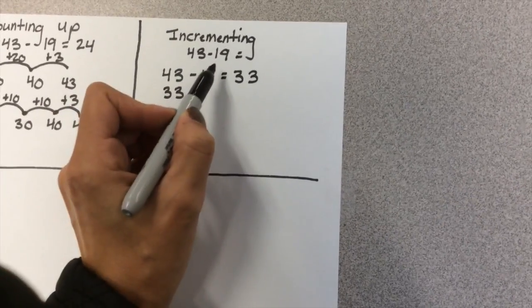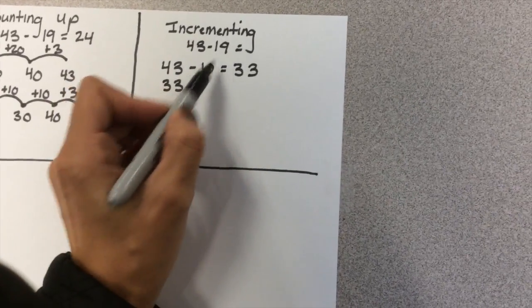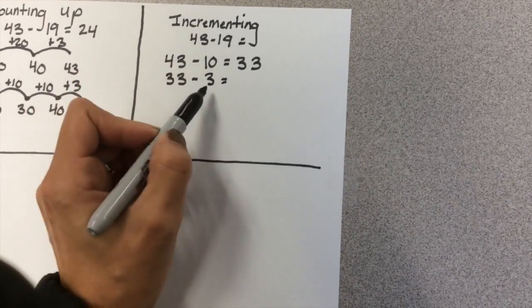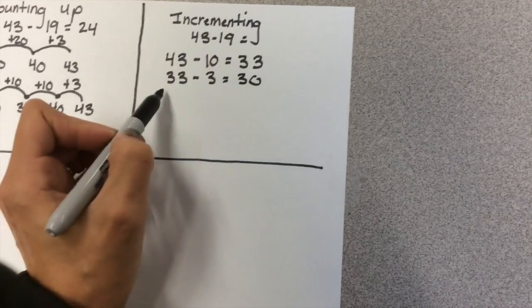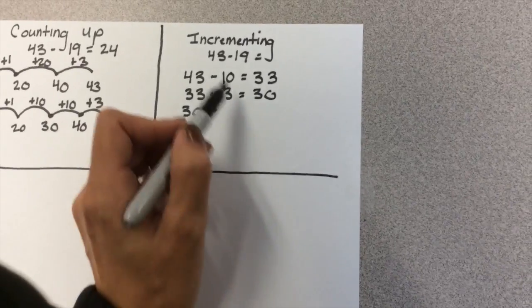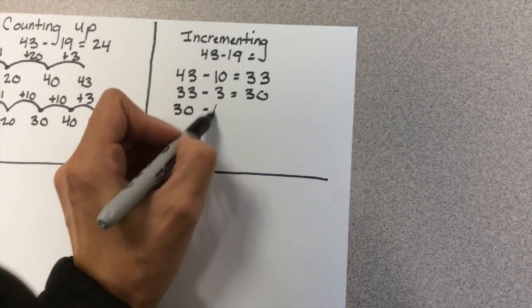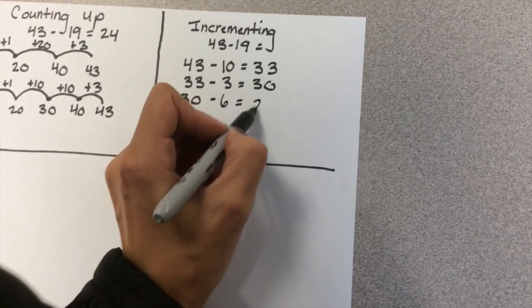So if I pull out 3 from that 9, it gets me down to a friendly number of 30. And so I still have another 6 I have to take away because I've only taken away 13 of my 19. So now I subtract 6, and 30 minus 6 is 24.